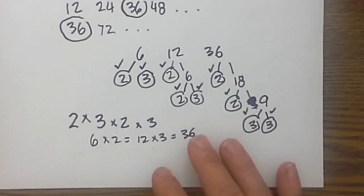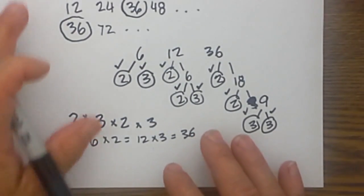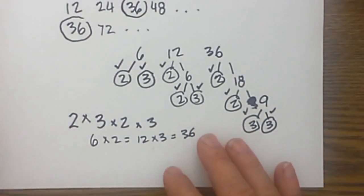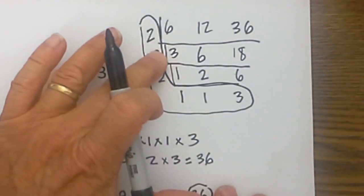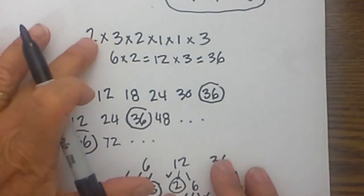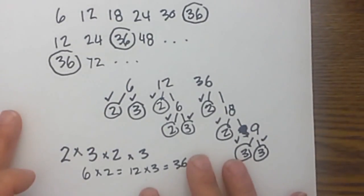So again that is 3 different ways to find the LCM. You have the ladder technique, the traditional factoring, and then finally you create a factor tree.